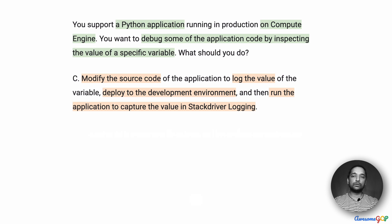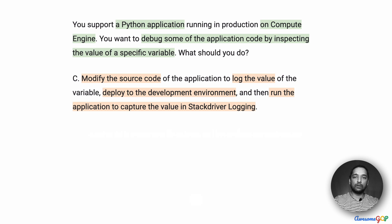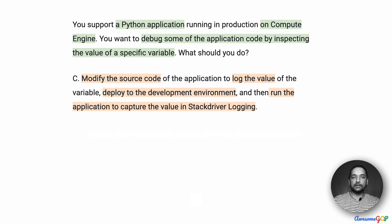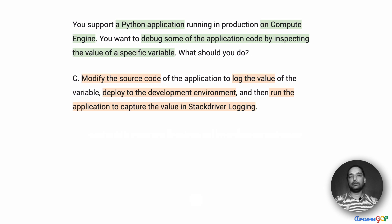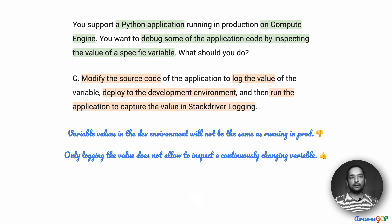Option C suggests: modify the source code of the application to log the value of the variable, deploy to the development environment, and then run the application to capture the value in Stackdriver logs. This is again something we don't want to do. Option A using a logpoint is automatically much better — there's no reason to stop the running production app, bring it down, modify it, and deploy it again. That requires too much work. Moreover, this says to deploy to the development environment, so the values are just not going to be the same. Option C is also eliminated.